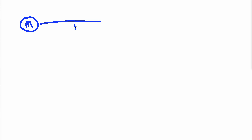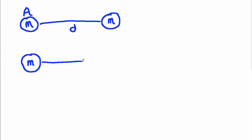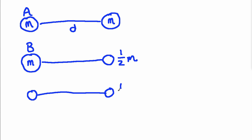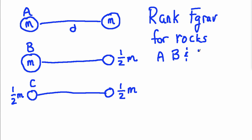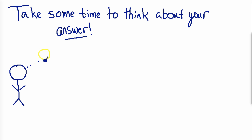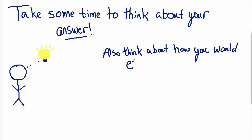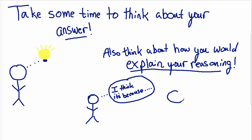Consider three cases, each with two rocks. In case one, two rocks each with mass m are separated by distance d — the left rock is rock a. In case two, two rocks are separated by the same distance d, but the rock on the right is only half the mass m — the left rock is rock b. In case three, again separated by distance d, but both rocks have half the mass m — the left rock is rock c. How would you rank the gravitational force on rocks a, b, and c from greatest to least? Take a moment to think about your answer and how you'd explain your reasoning to a classmate.